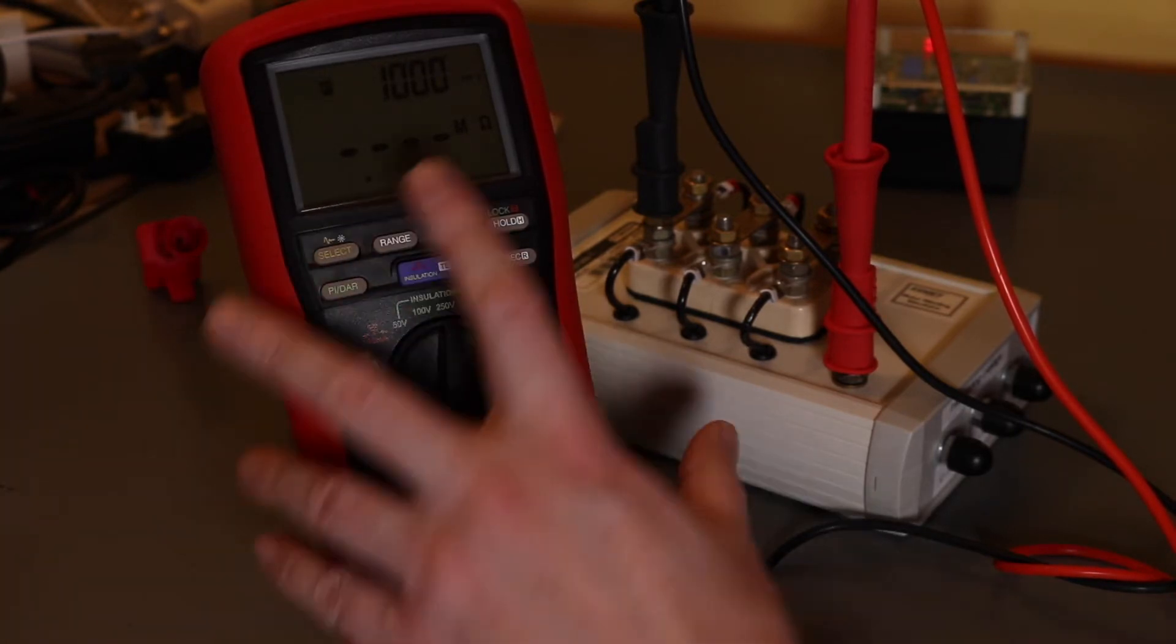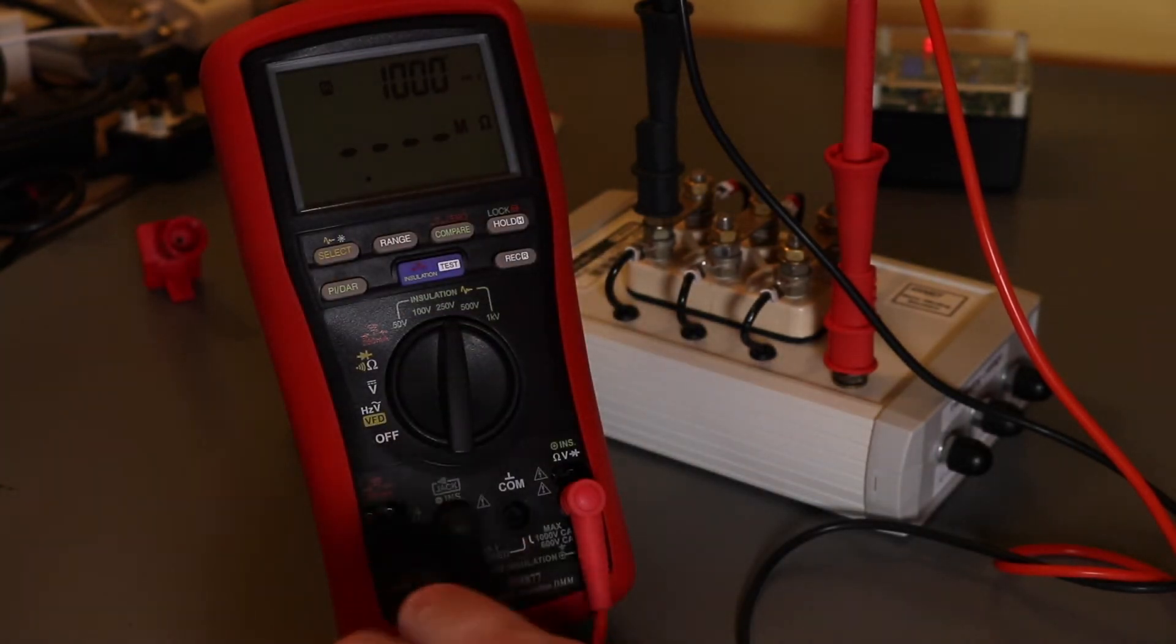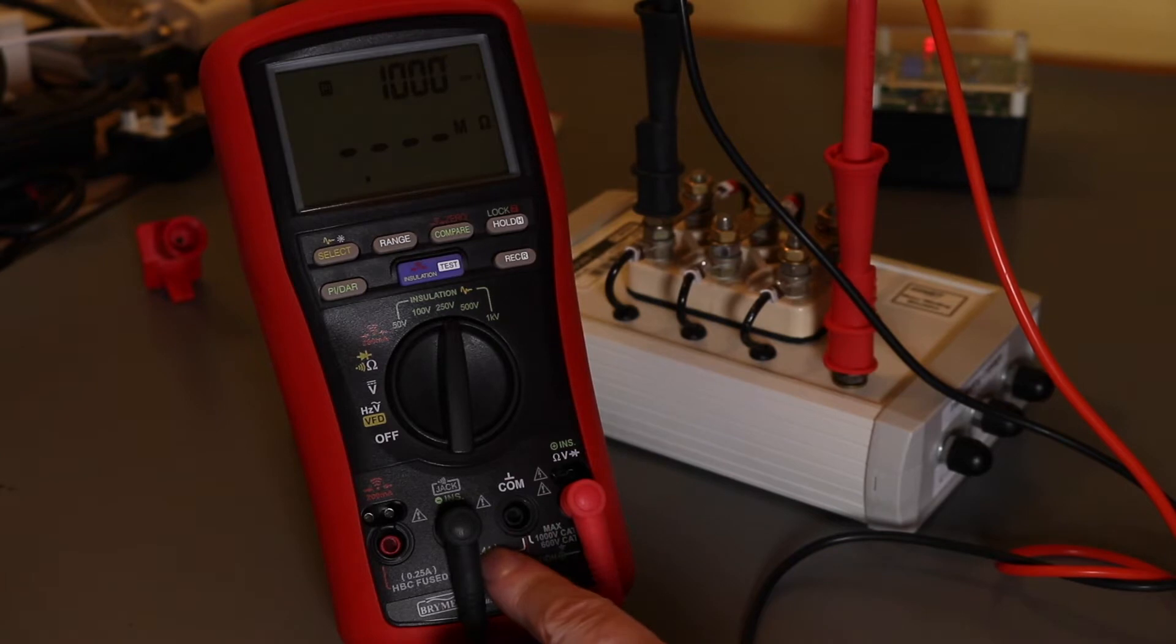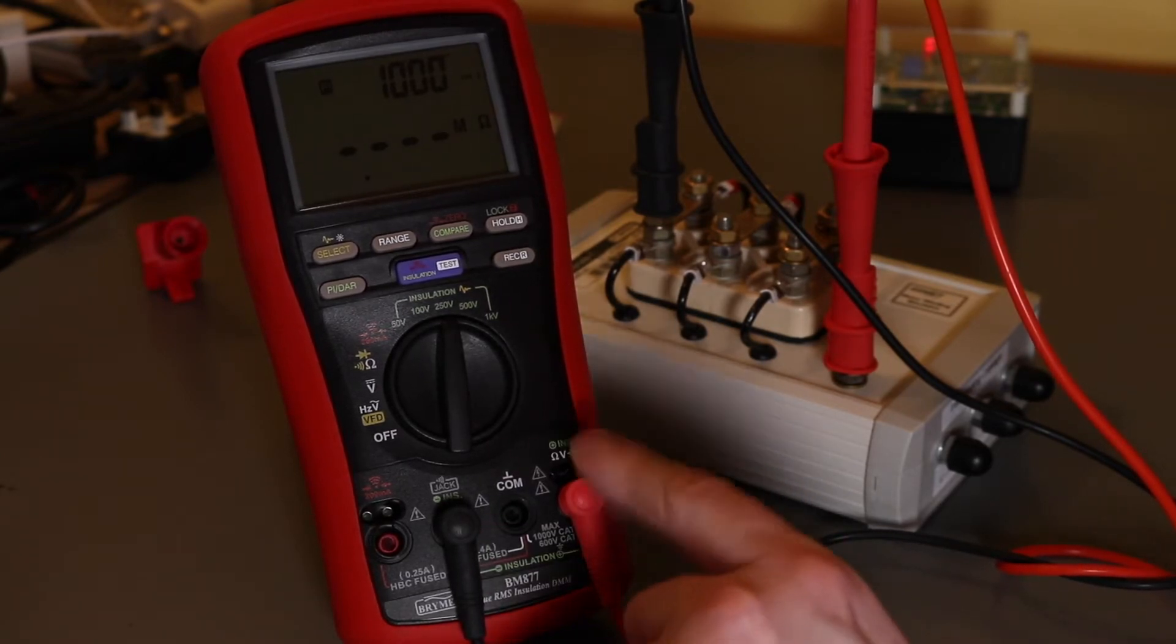But we'll do a Pi test on this. It then sets the timer clock up there on the top right. So the jacks you use for the insulation test are this separate one here and then the standard ohms volts input terminal.